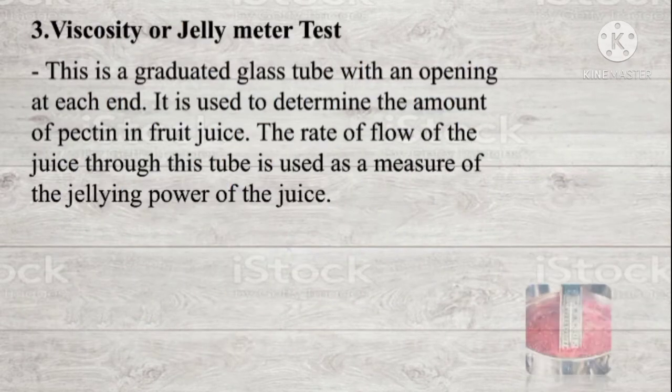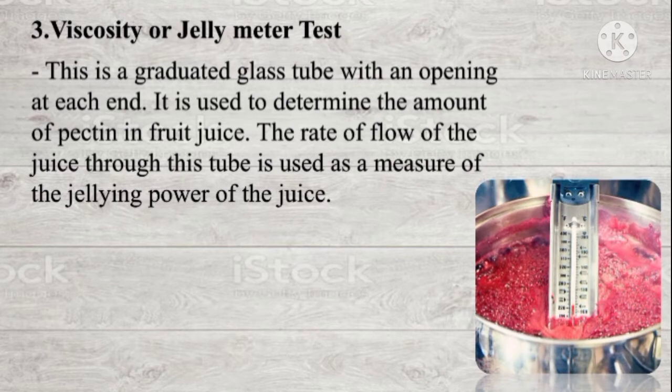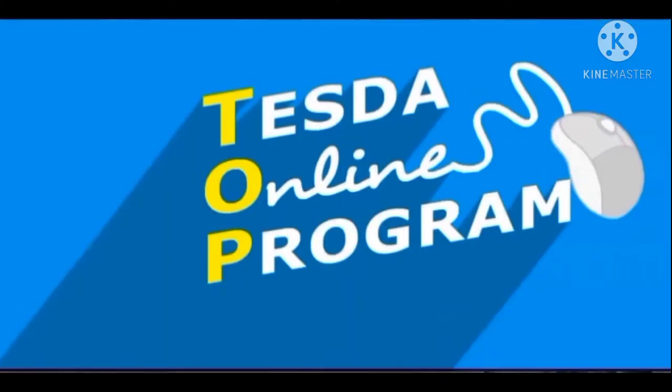The last test is the viscosity or jelly meter test. This is a graduated glass tube with an opening at each end. It is used to determine the amount of pectin in fruit juice. The rate of flow of the juice through the tube is used to measure the jelling power of the juice. Now let's watch a short video of testing the pectin content of fruits.